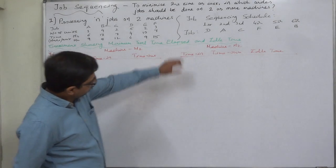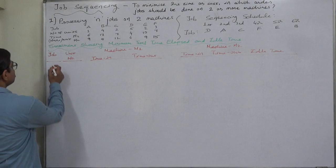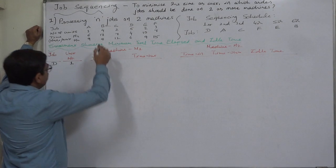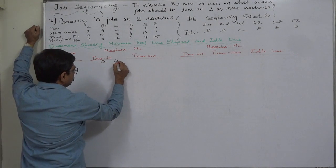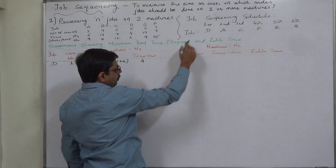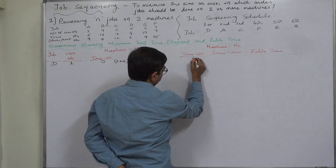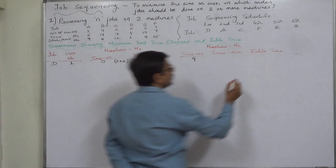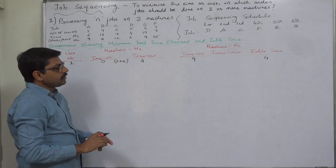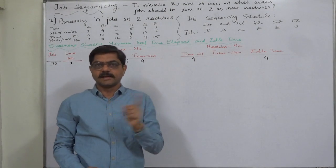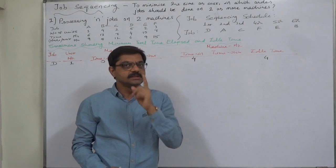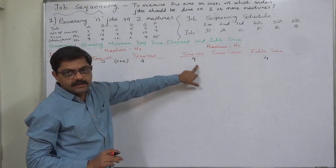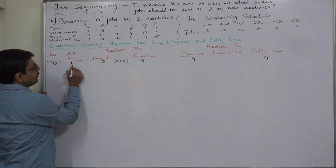We follow this order: first, job D. Its first unit will be on machine 1 at time 0. Each unit requires 4 hours on machine 1, so time out will be 4. On machine 2, the time in for the first unit becomes 4, and this 4 hours is the idle time of machine 2 because machine 2 had to wait. When the machine has to wait, there is idle time. When the job or unit has to wait, there is no idle time. This is a very important rule to determine idle time.